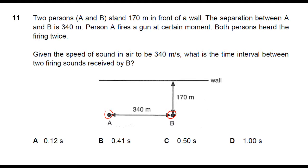So when A fires a gun, B will hear two distinct sounds. Where do the two distinct sounds come from? You have to understand that the first sound has to be direct method where it travels directly from A to B.